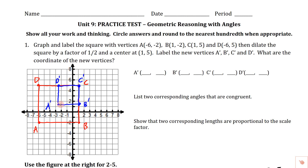We've got it drawn; now we write the coordinates. A prime is the ugliest one — that's going to be negative two-and-a-half, or negative five-halves, and then up one-and-a-half. So A prime is (-2.5, 1.5). B prime is (1, 1.5). C is still the center of dilation at (1, 5). D prime went back two-and-a-half and up five, so D prime is (-2.5, 5).